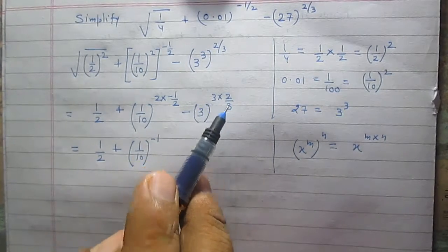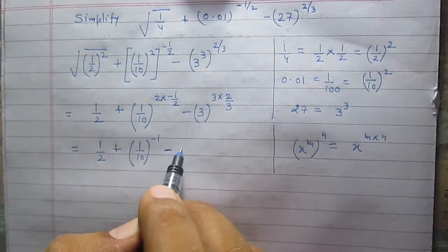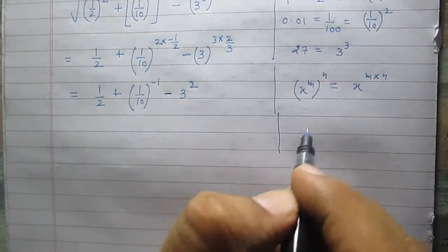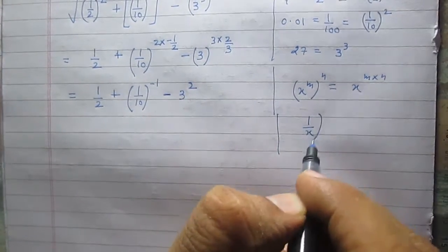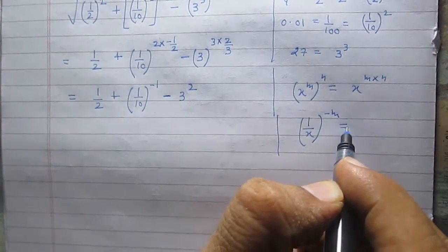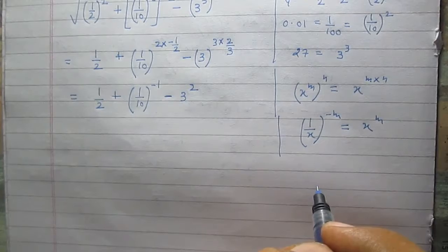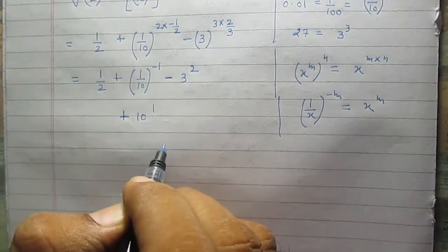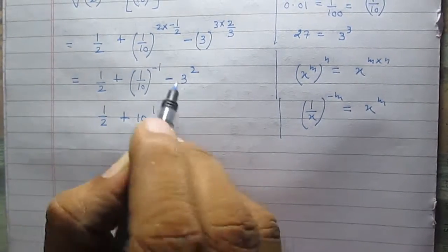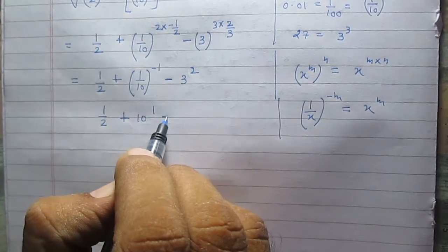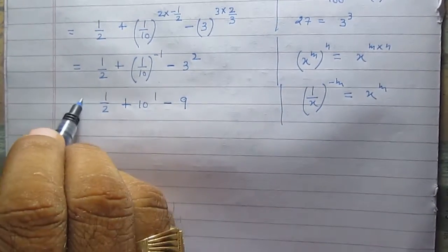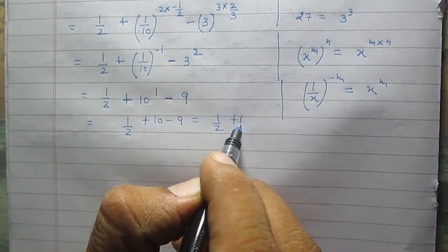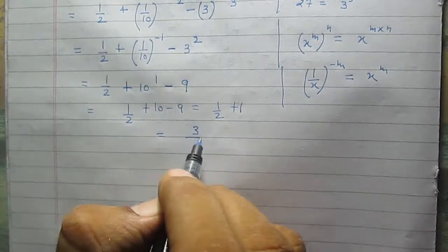The multiplication of 3 and 2 by 3 gives 2, so the last term is 3 raised to the power 2. Using the exponent rule that 1 upon x raised to the power minus m equals x raised to the power m, the second term becomes 10 raised to the power 1, which is 10. So the expression becomes 1 by 2 plus 10 minus 9, which equals 1 by 2 plus 1, giving the final result 3 by 2.